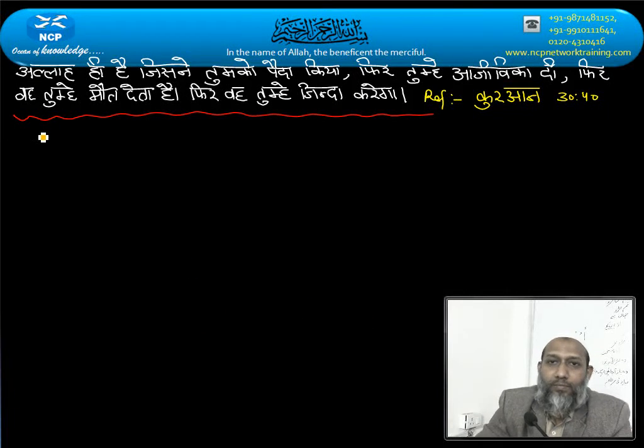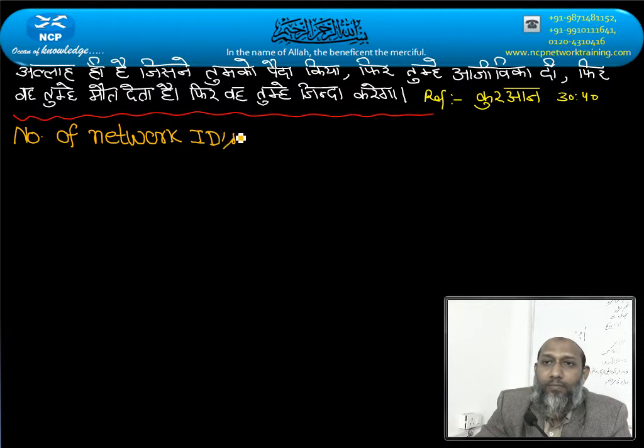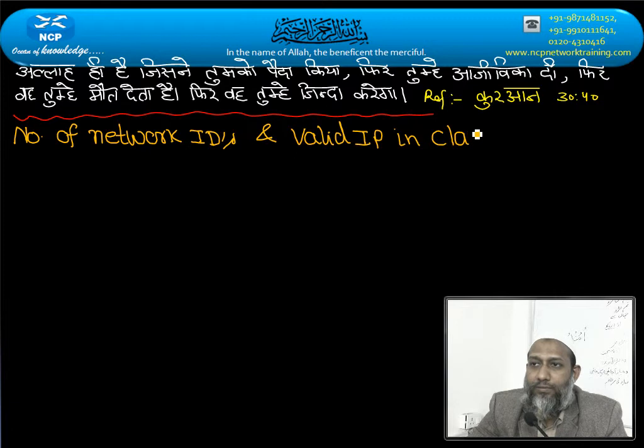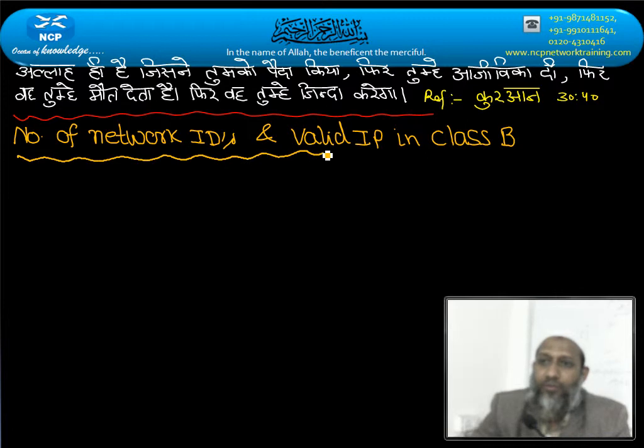Next topic, number of network IDs and valid IP in class B. In class B, how many network IDs will be, total and how many valid IP addresses will be.